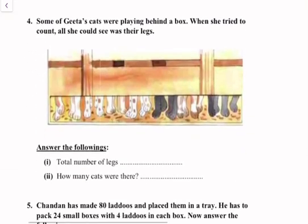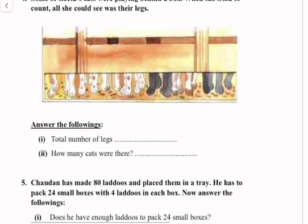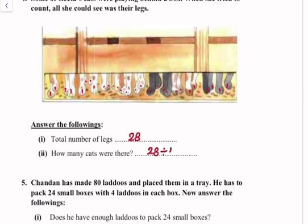Question number 4: Some of Gita's cats were playing behind a box. When she tried to count, all she could see was their legs. The total number of legs counted are 28. How many cats were there? We will divide 28 by 4 because each cat has 4 legs. 28 divided by 4 gives the answer: 7 cats.